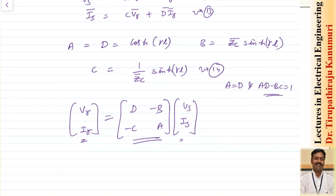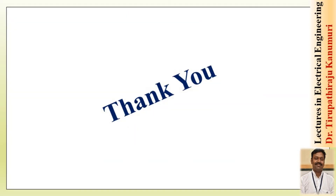In the next class we will discuss surge impedance and surge impedance loading of a transmission line. After that we will cover nominal pi and nominal T representations for evaluating transmission line performance — calculating regulation and efficiency. Finally, we will derive the wave equation, showing how the wave travels at 3×10^8 meters per second. I hope the derivation and ABCD parameters are clear. Leave any questions in the comments section below. Thank you.